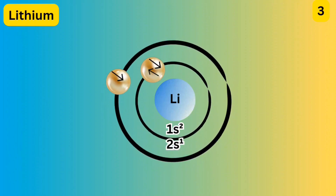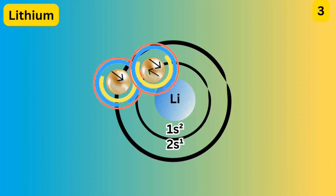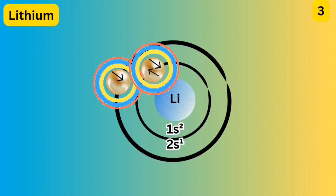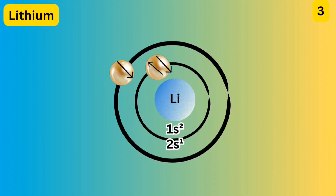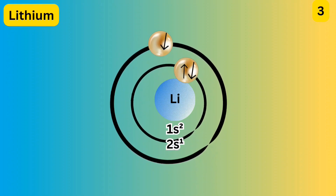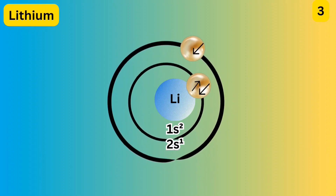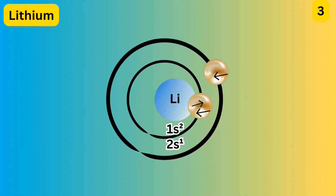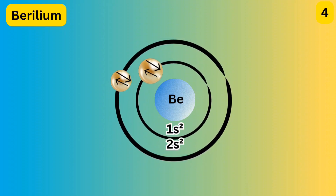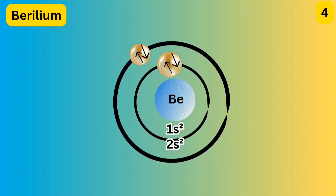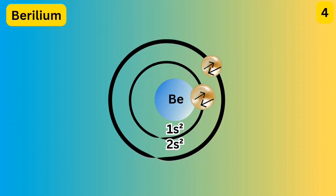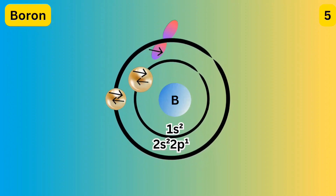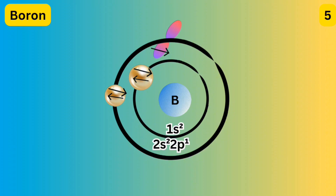In lithium there are three electrons: two electrons sit in the 1s orbital and one electron goes to the 2s orbital. The maximum electrons that can stay in the first shell is two, so the third electron goes to 2s. There are four electrons in beryllium — two in 1s and two in 2s — so the configuration is 1s2 2s2.